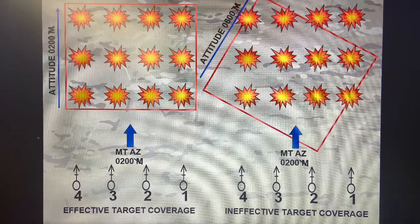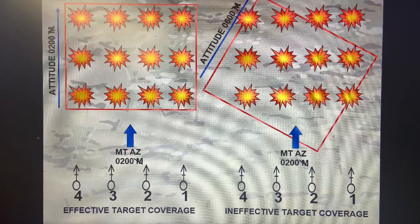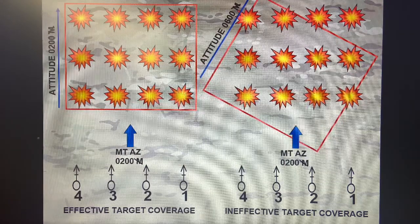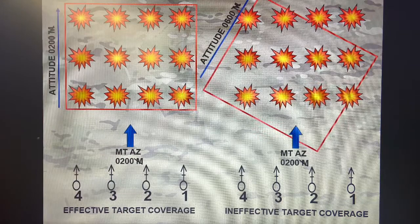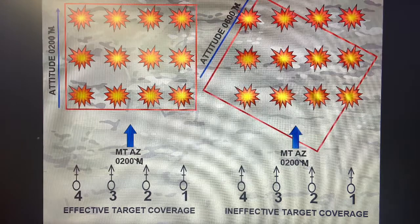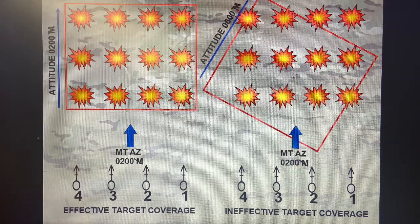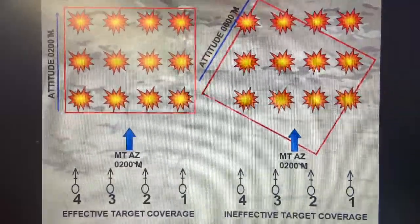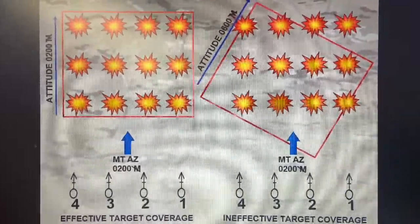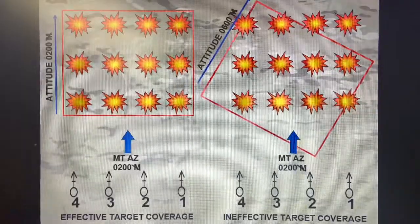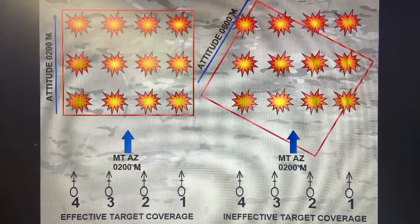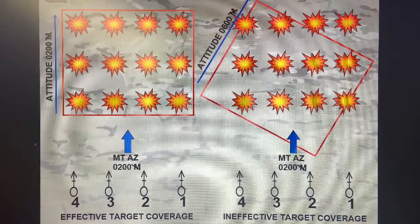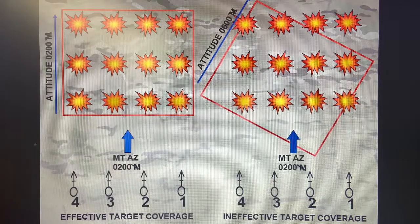Here are some little scenarios. To the left is what we're trying to achieve — that's why we want our attitudes to be within 100 mils. Because if they're not, you're going to get that depiction on the right-hand side, and that's not what we want, because you're not covering the entire target area.